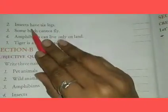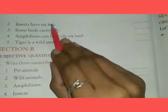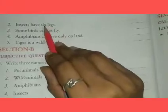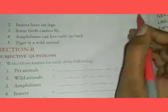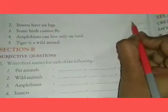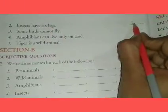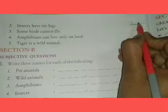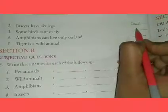Second: insects have six legs — جو انسیکٹ ہوتے ہیں ان کے six legs ہوتے ہیں. State true. T-R-U-E. True.